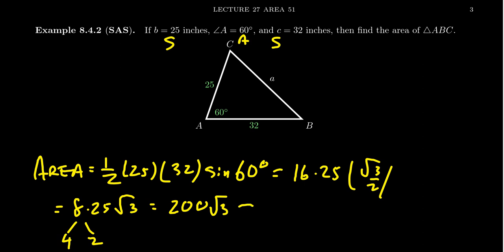But from a practical sense, we probably need to approximate this as well. So 200 times the square root of 3 is approximately, we'll consult the calculator. If we round to the nearest square inch, we would end up with 346 square inches like so.